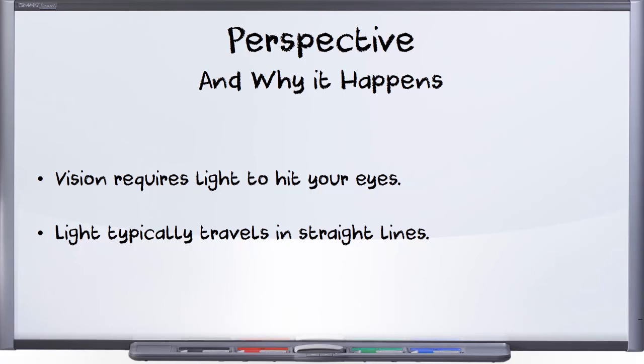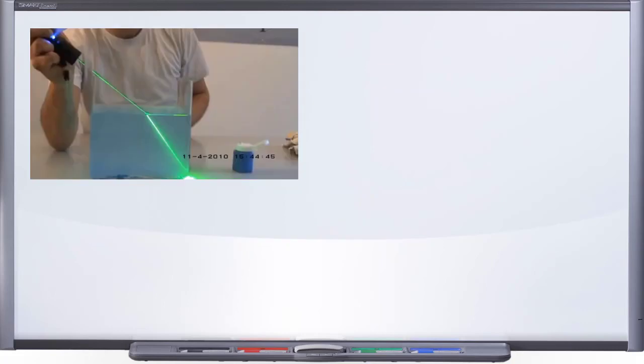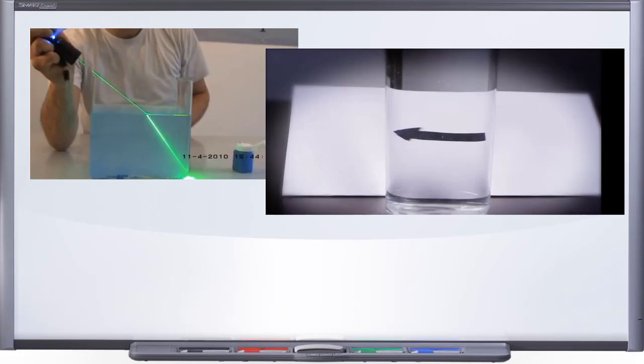Before we go any further, though, I would like to clarify that second point there because I anticipate that could get misinterpreted. Light doesn't always travel in straight lines. Sometimes light can bend. But that isn't what this video is about. This video is about perspective. And perspective is the result of light traveling in straight lines. If you see a phenomenon where light is bending, we don't call that perspective. That would be something else.